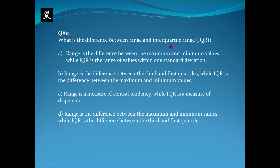What is the difference between range and interquartile range? Range is the difference between the maximum and minimum values, while IQR is the range of values within one standard deviation. Range is the difference between the third and first quartile, while IQR is the difference between the maximum values. Range is a measure of central tendency, while IQR is a measure of distribution. Range is the difference between the maximum and minimum values, while IQR is the difference between the third and first quartile. The right option is option D.